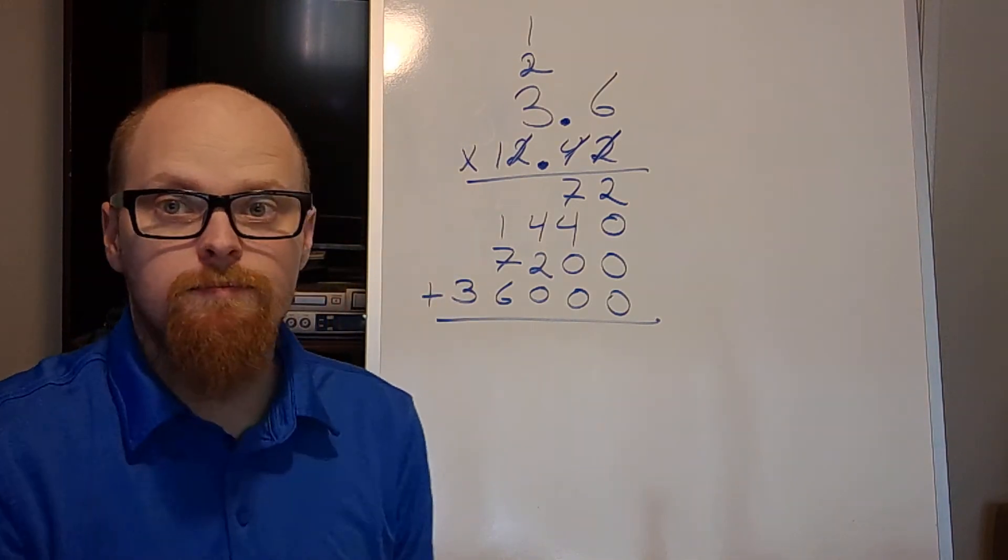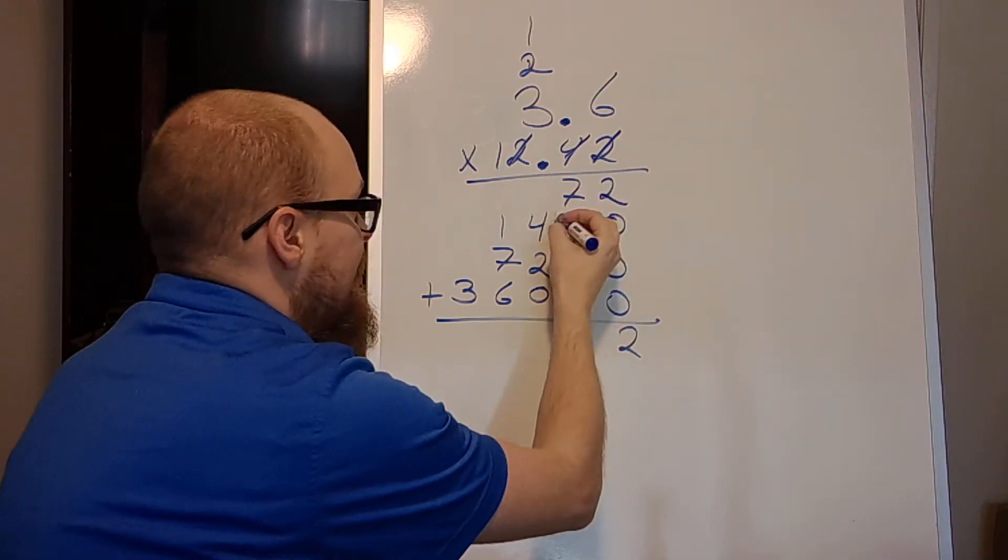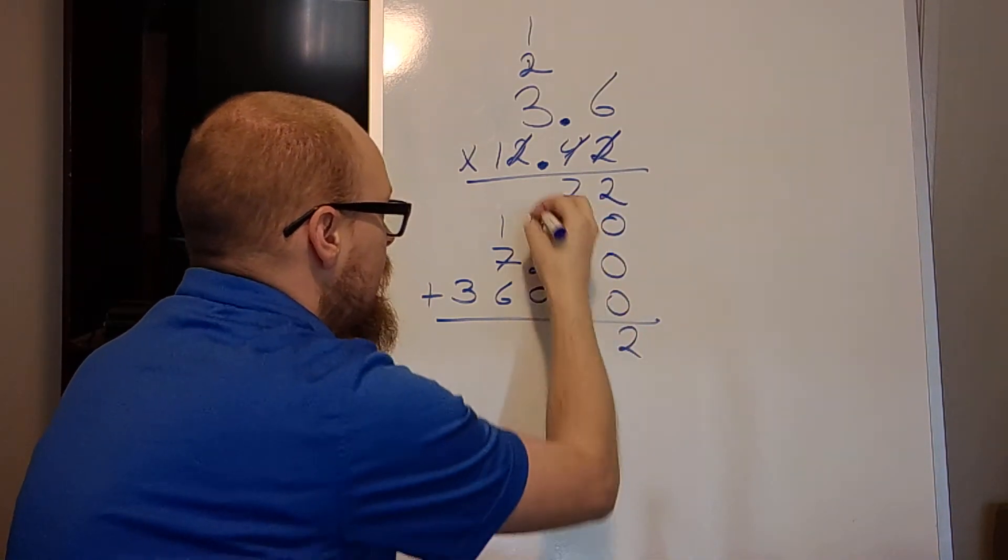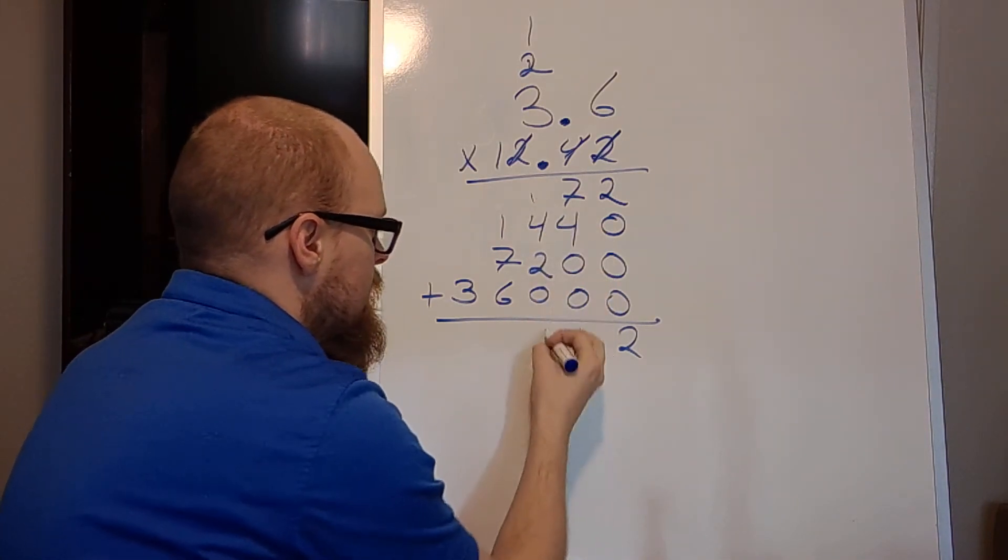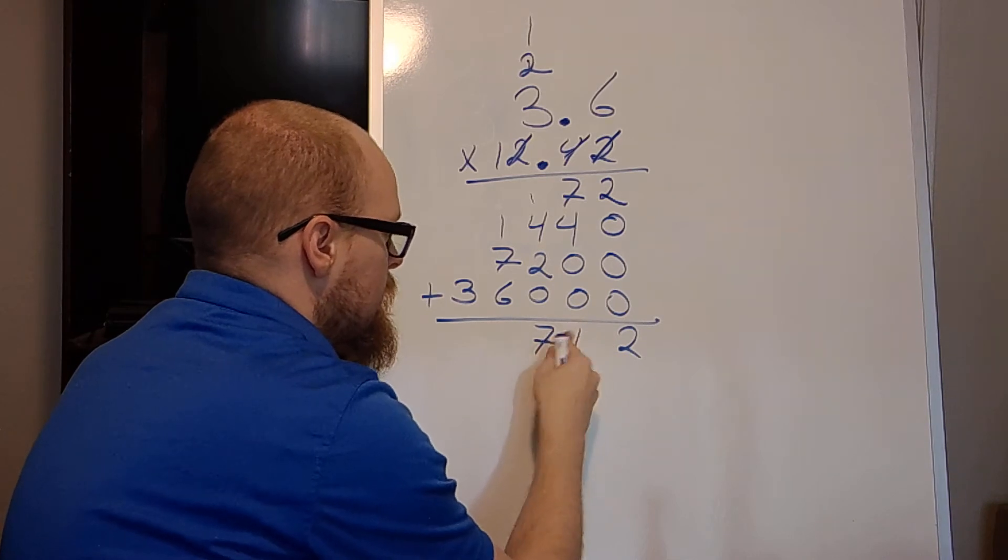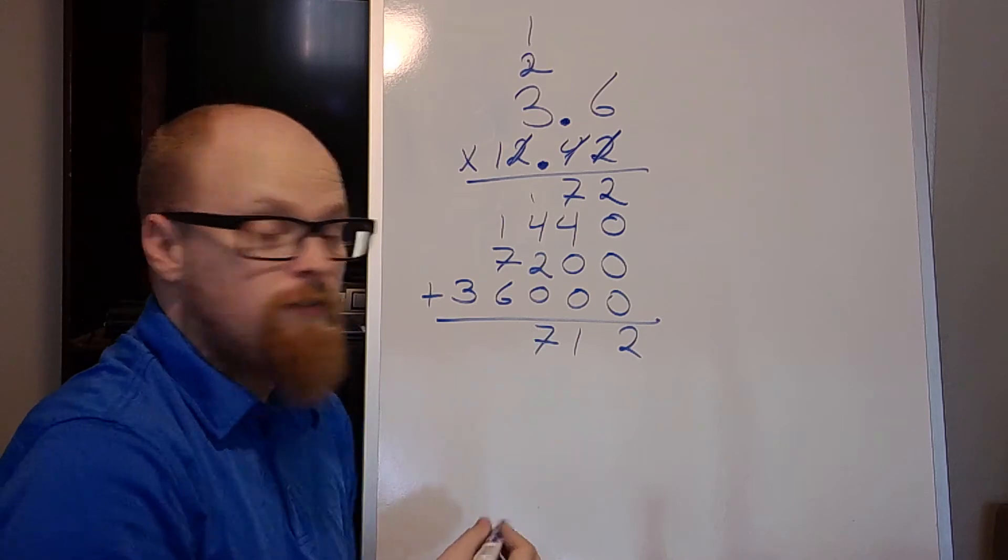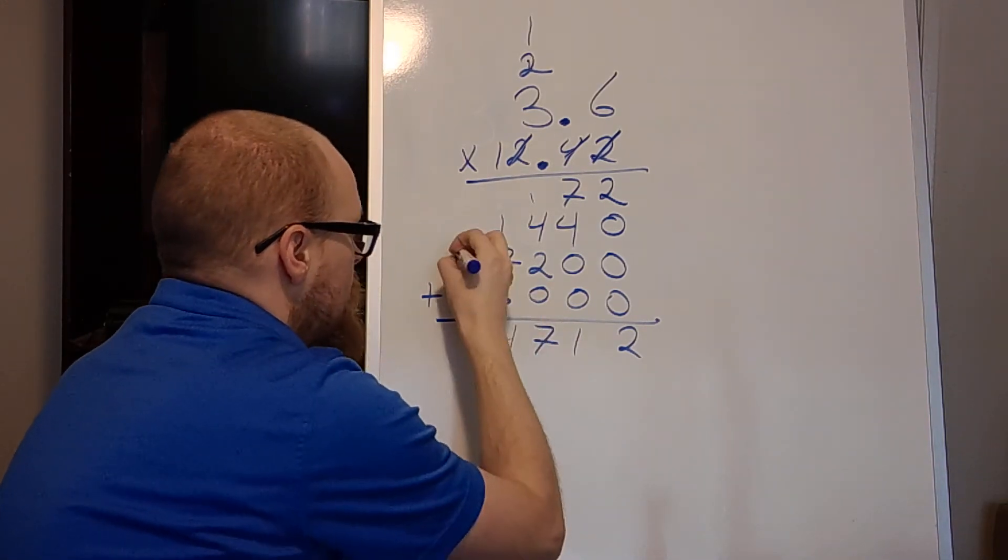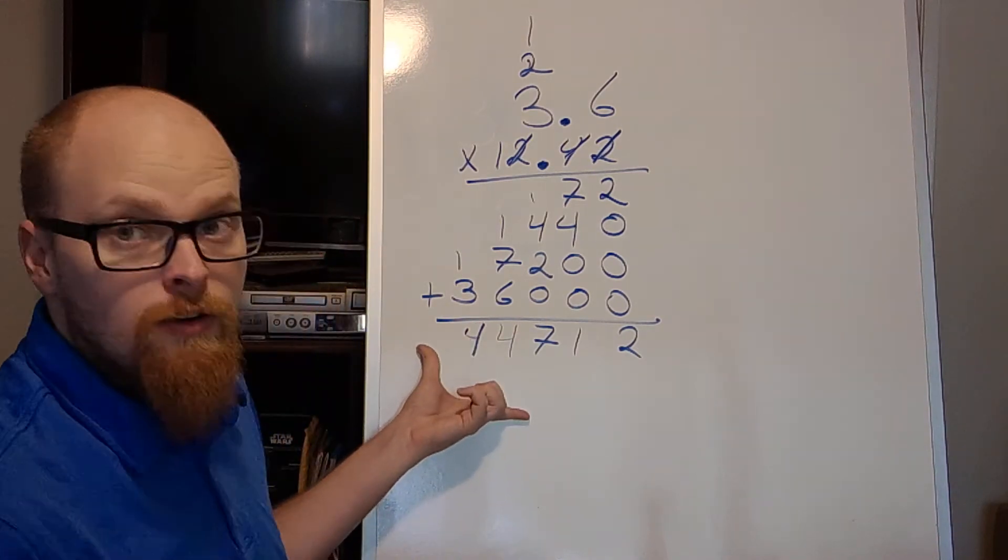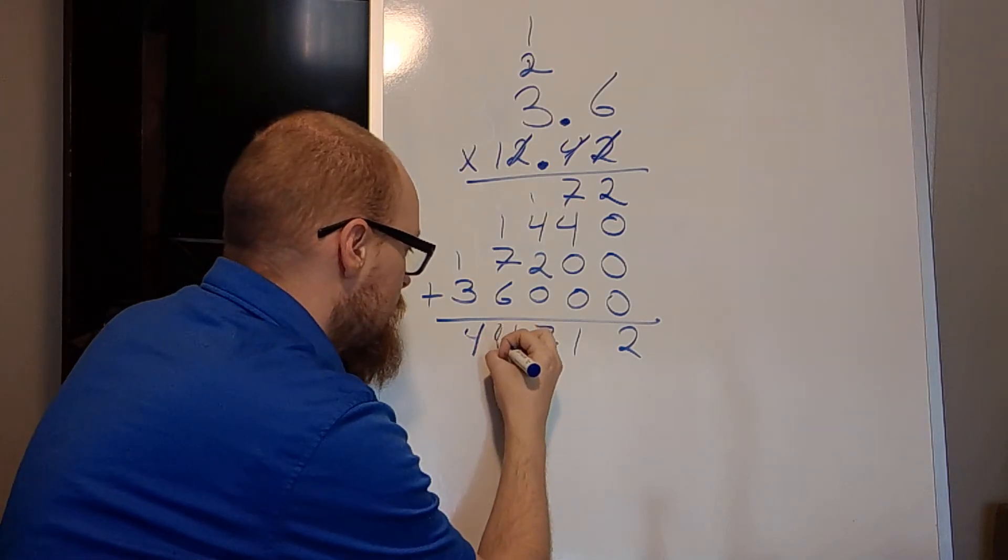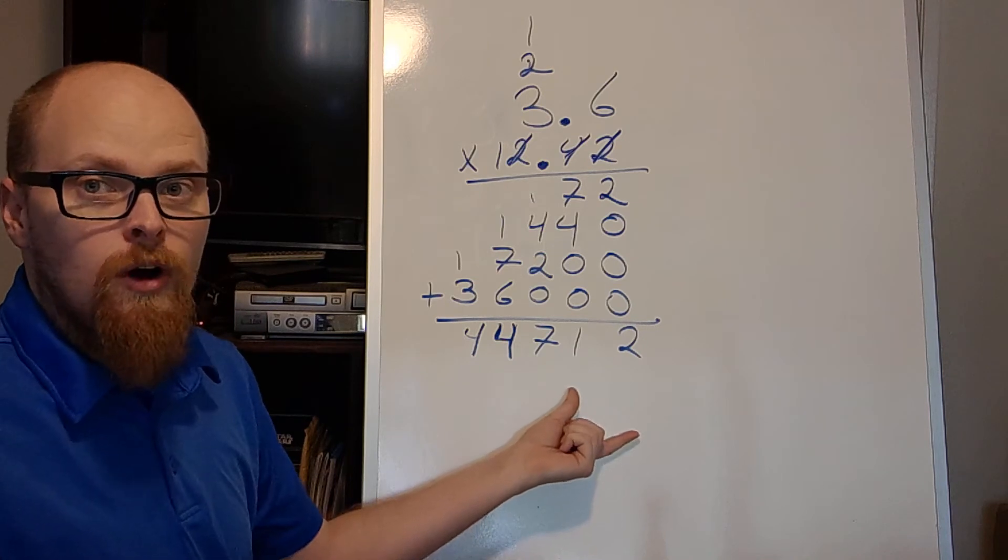Now we add these numbers up, just like normal multiplication. I've got 2, 7, 8, 9, 10, 11. So I've got a 1 and I'm carrying a 1. 5, 6, 4, 5, 6, 7. That's a 1. That's a 1. 7 plus 7 is 14. And 3 plus the 1 I just carried is 4. So now down here I have 4, 4, 7, 1 and 2.